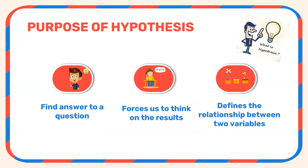By the two variables I mean the independent variable and the dependent variable. The independent variable is the one that the researcher can manipulate, and the dependent variable is the one that the researcher measures. The rise or increase and decrease of the independent variable can have an effect on the dependent variable. So the relationship can be determined very clearly when we formulate a hypothesis.